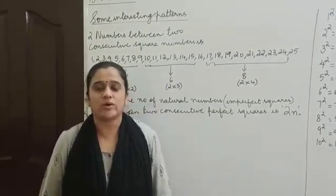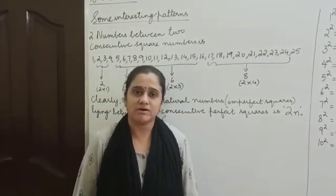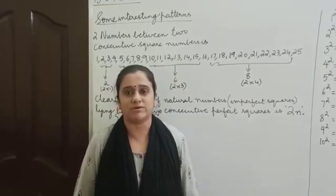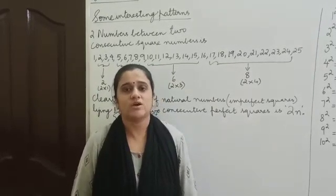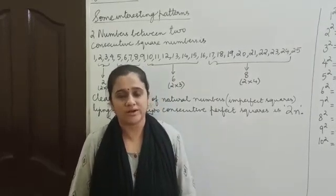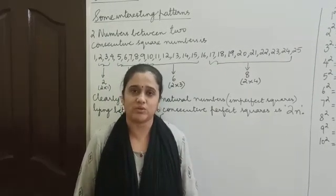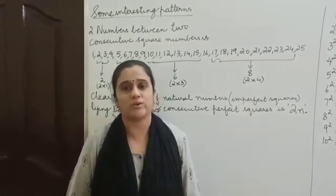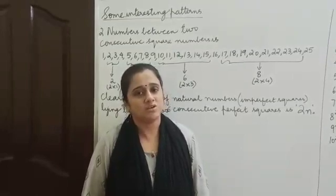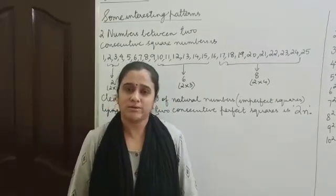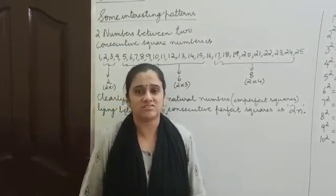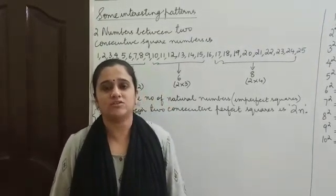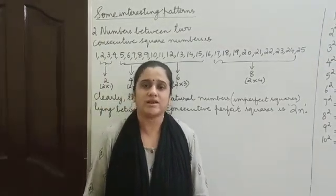What is a perfect square or a square number? If a number can be expressed as a square of some other natural number, then that number is said to be a perfect square. For example, 121 can be written as 11 squared, because 11 into 11 is 121. Another example: 225 is a perfect square because it can be expressed as 15 squared. 15 into 15 is 225, so 225 is a perfect square or a square number.